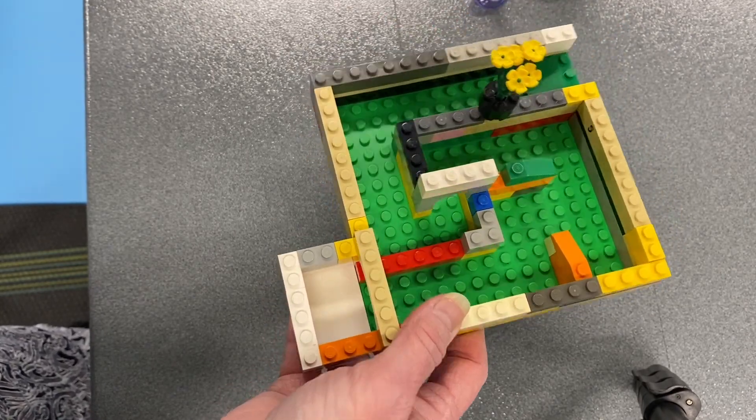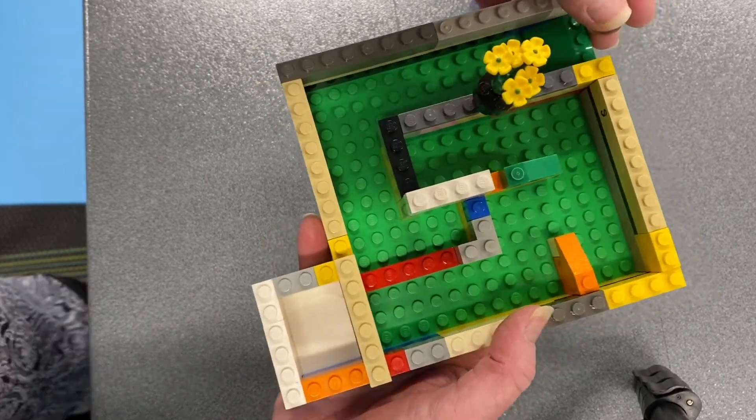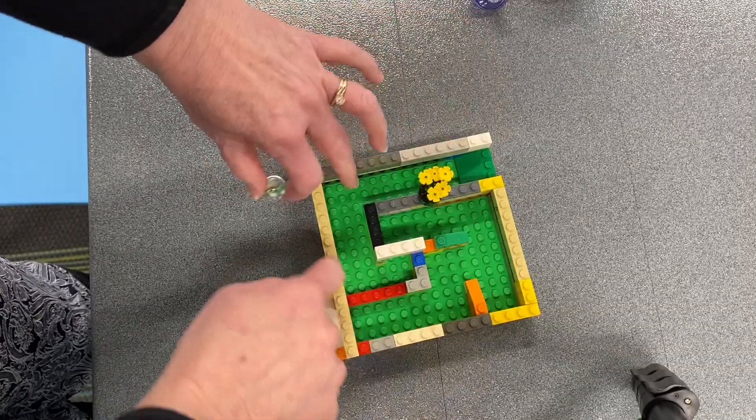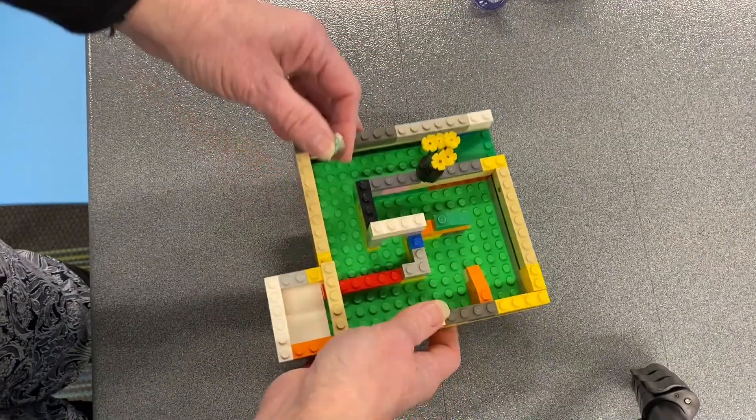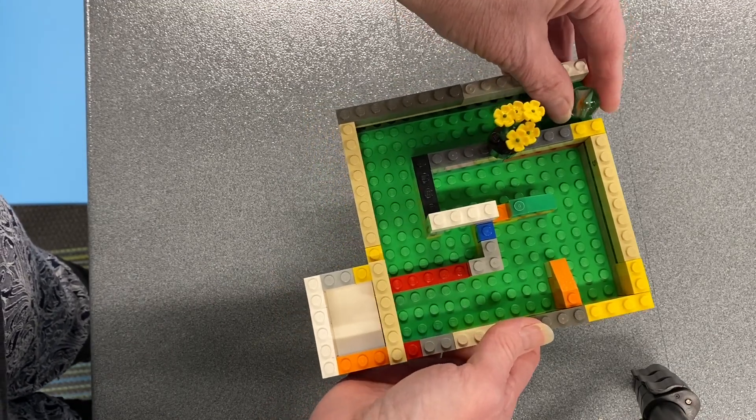And I just added the flowers for decor because why not. So you'll have to maneuver it around, so putting it flat won't really work. And the little bumps on the Lego board kind of help give some resistance, but they kind of help you guide it and keep it from going all over the place too.